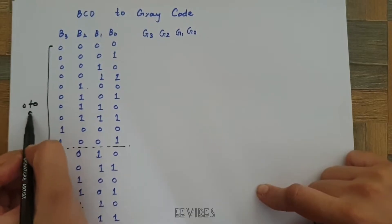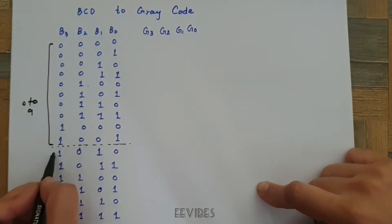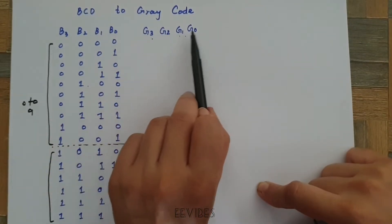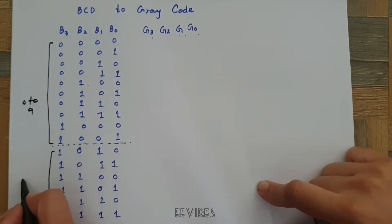0 to 9 are the BCD numbers and for the rest of the combinations, you can see the Gray code bits will be marked as the don't care conditions.